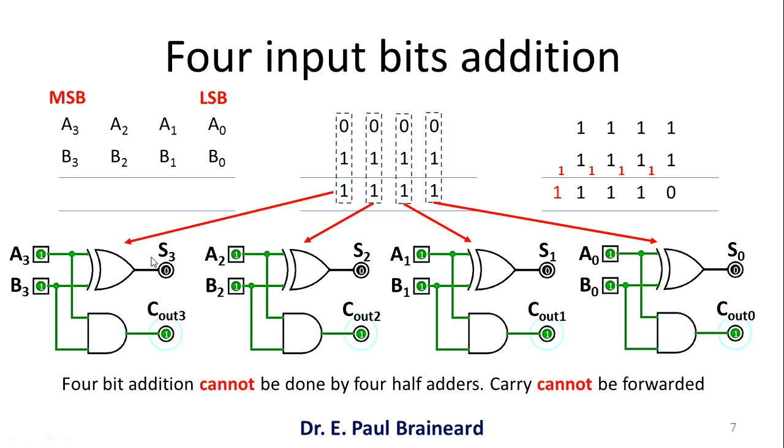Now let us do hand calculations to add 4 ones with another 4 ones. Let us start with LSB, 1 plus 1, the sum is 0 and carry is 1. The carry resulted from LSB must be forwarded to the next bit addition. In the next bit addition, the sum is 1 plus 1 plus 1 which results in a sum 1 and carry 1.